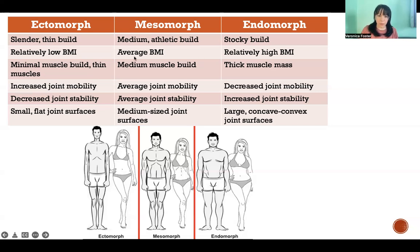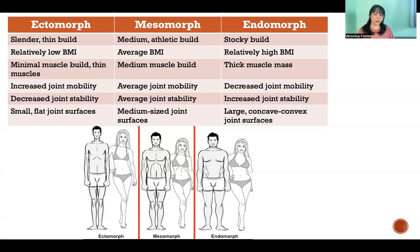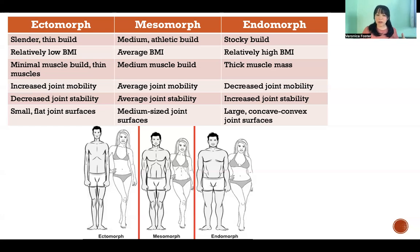Then finally, a mesomorph body type — the one in the center, also the one in the middle in the picture — they're kind of halfway in between on most of these characteristics. They tend to have a more medium athletic build, average BMI, and a more medium muscle build. They'll have an easier time losing weight than an endomorph and an easier time building muscle than an ectomorph, but they're not really at either extreme. They have more average joint mobility, average joint stability, and sort of medium-sized joint surfaces. So a mesomorph splits the difference between the two extremes, where an ectomorph tends to have lower body mass, kind of taller, longer, thinner limbs, and an endomorph is the opposite extreme with higher body mass, denser, thicker muscle, and a stockier, thicker build.